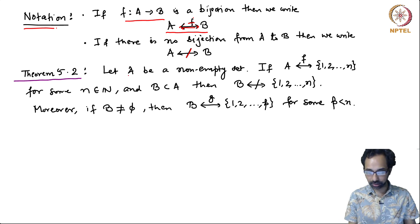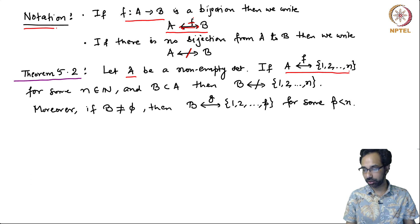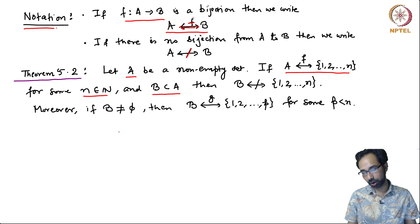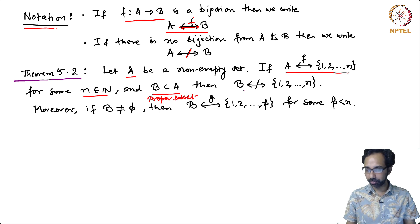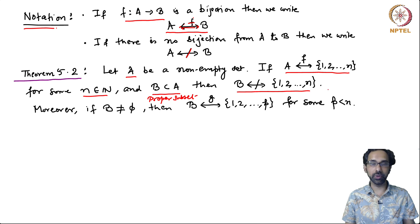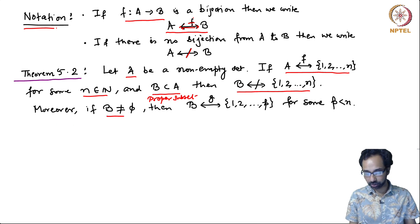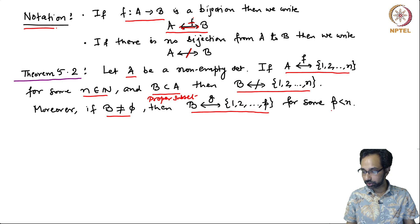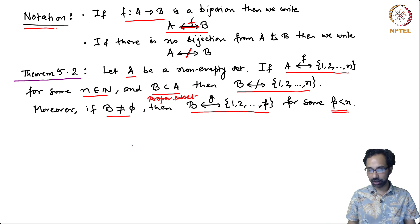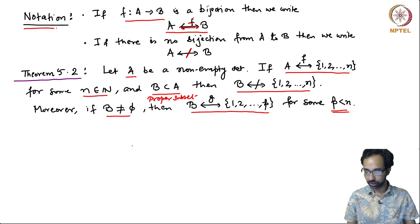The theorem says that if you have a non-empty set A and A is in bijective correspondence with the set {1, 2, ..., N} for some natural number N, and if you take B to be a proper subset of A, then B cannot be in bijective correspondence with the set {1, 2, ..., P} for some P strictly less than N. And this will allow us to show that our definition is unambiguous. So let us prove the theorem.